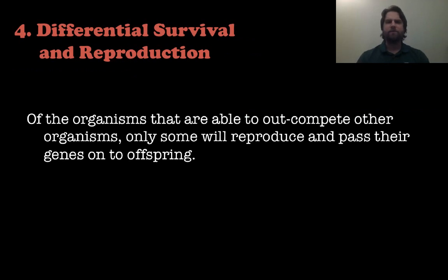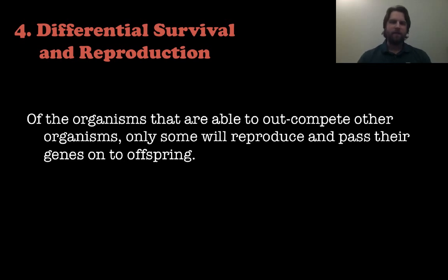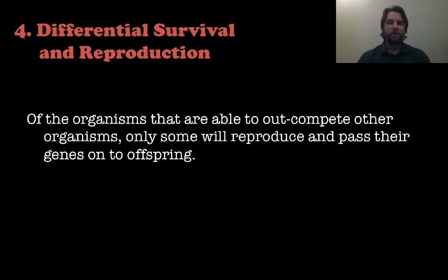Finally, we have differential survival and reproduction. This means there are organisms within a population that out-compete other organisms, but only some of them will reproduce. Just because an animal survives and out-competes everybody doesn't necessarily mean it's going to reproduce and have offspring. That's the whole idea of differential survival and reproduction.